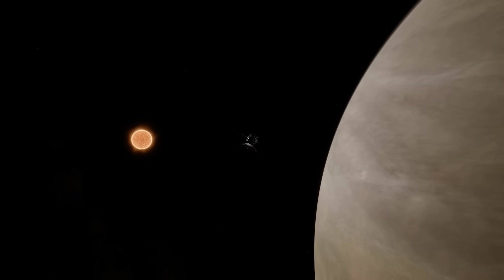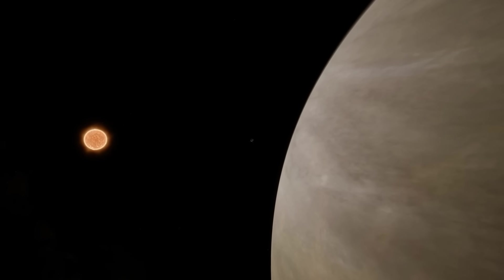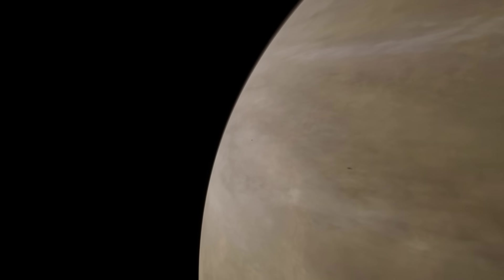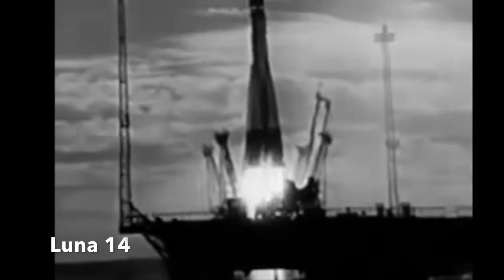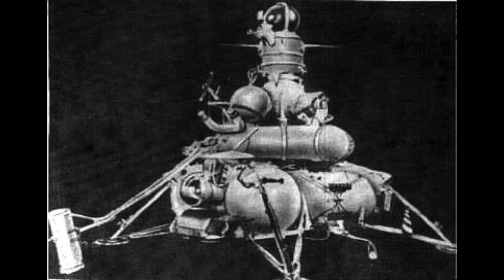Venera 3 experienced another system failure along the way, but the Soviets' aim was true, so the probe still managed to hit Venus like a cannonball. This became the first man-made object to ever crash into another planet. The USSR actually scored a hat-trick on impacting near-Earth bodies. They were the first to crash land on the moon, Venus, and Mars.